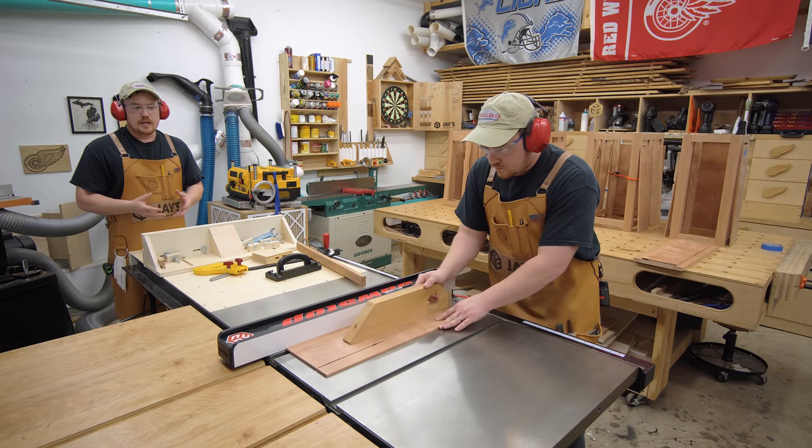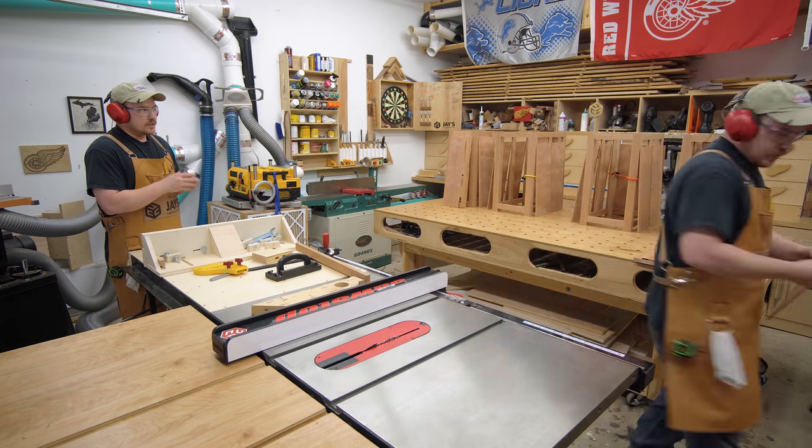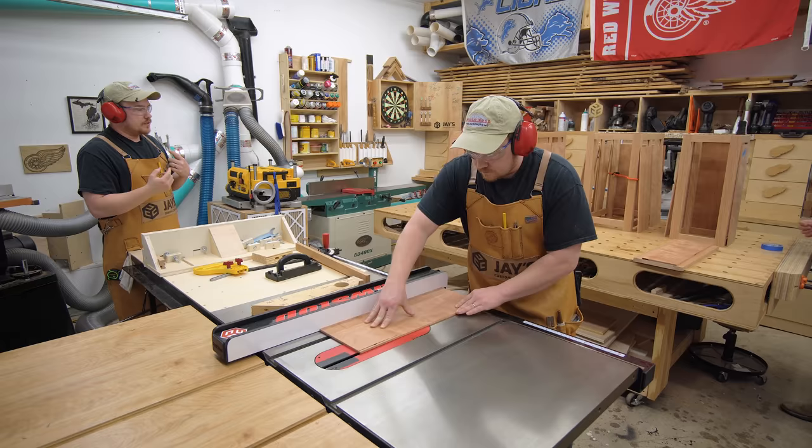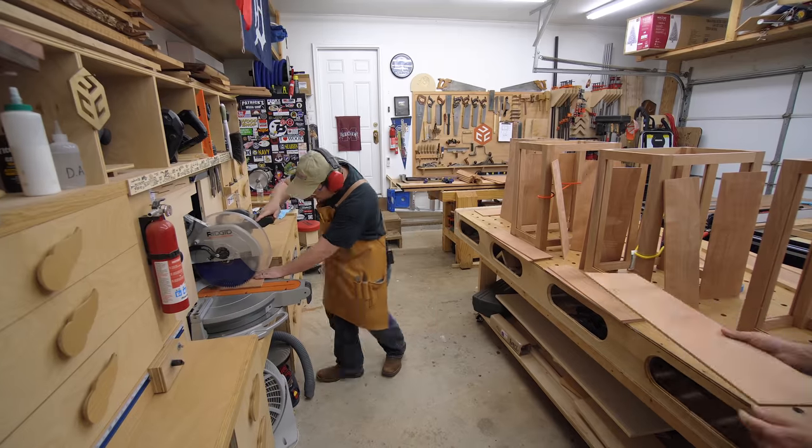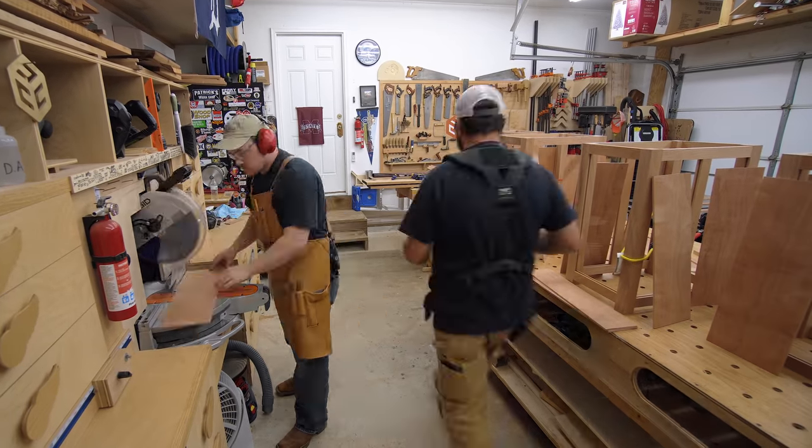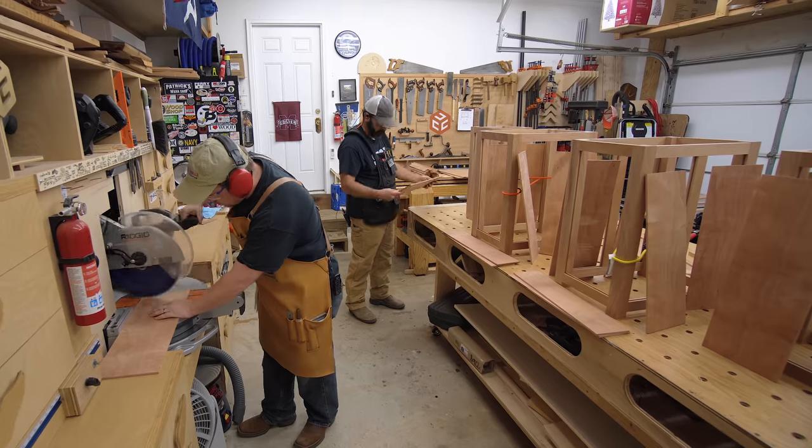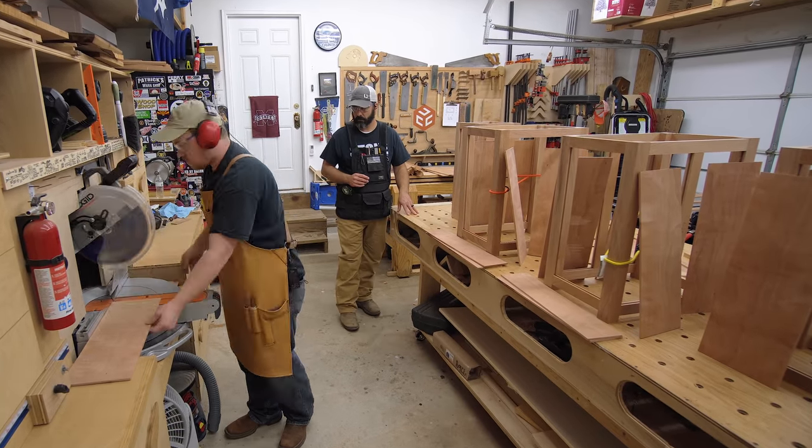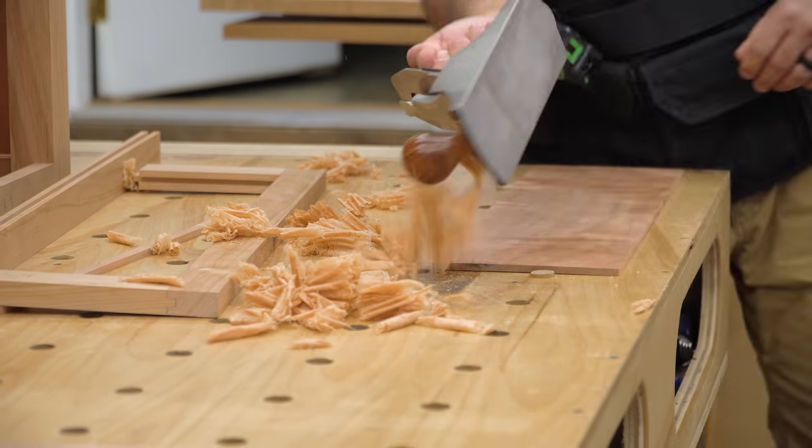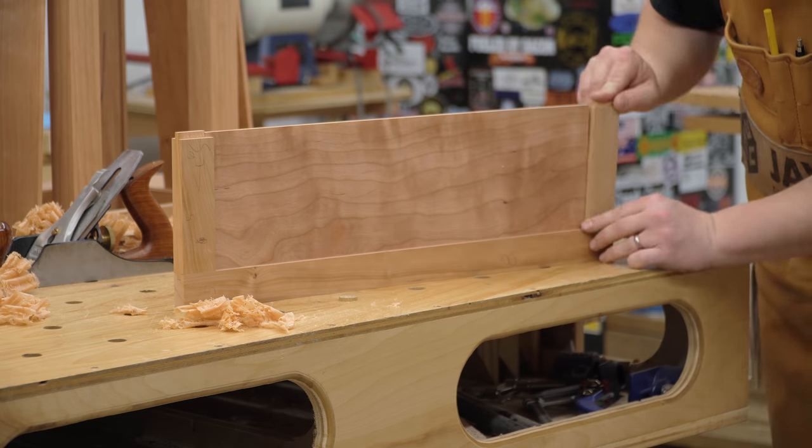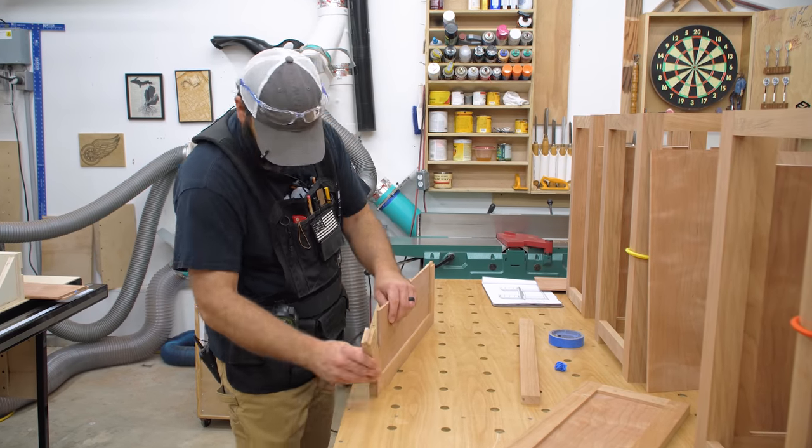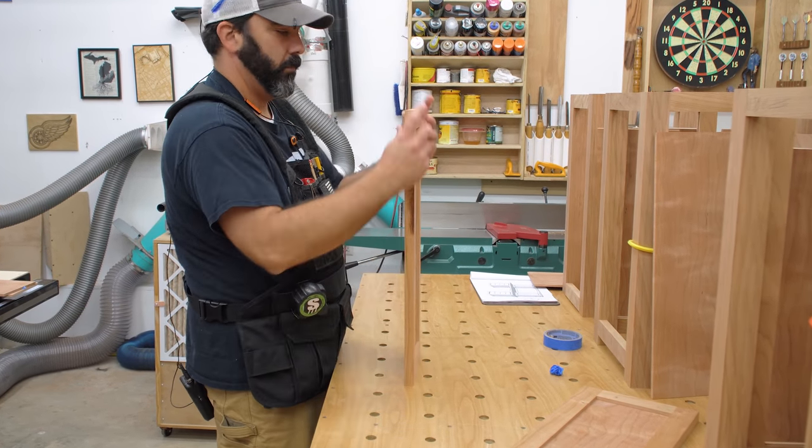Now that the location for all of the panels is established, we can cut them to their final width. To do so, we're using the table saw. We're going to start with the upper cabinet doors because they are the most narrow in width, and work our way around the upper cabinets. Then we can go to the lower cabinets.